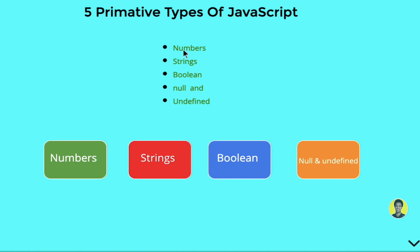The primitive types in JavaScript are five. They are: Numbers, which are numeric values; Strings, which are text; Boolean; Null; and Undefined, which means a value that hasn't been defined.